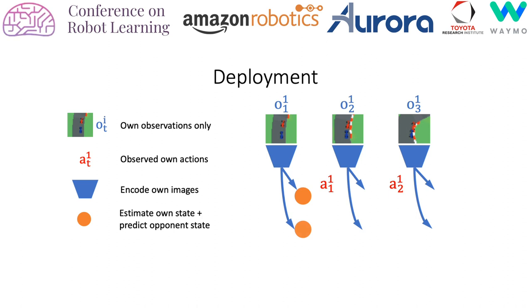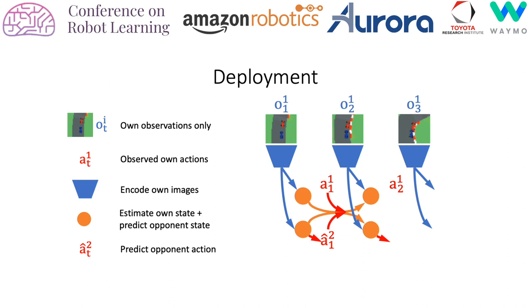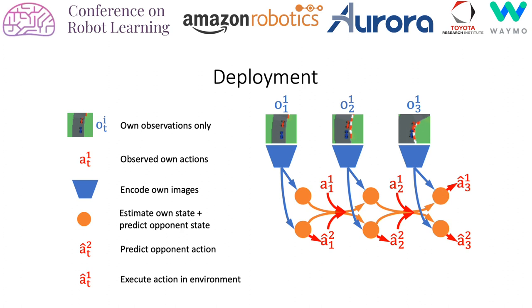At test time, we do not have access to the opponent's observations. The agent's own observations are used to predict the opponent's latent space and subsequently its actions.